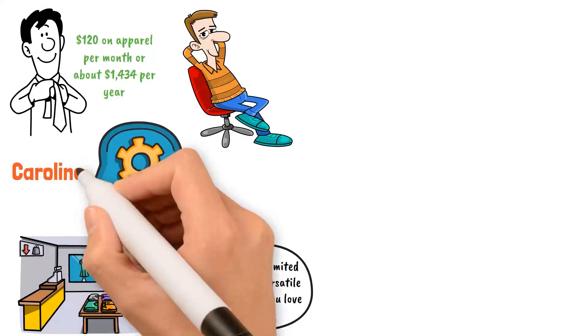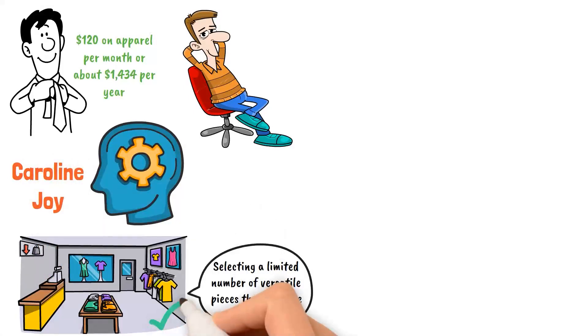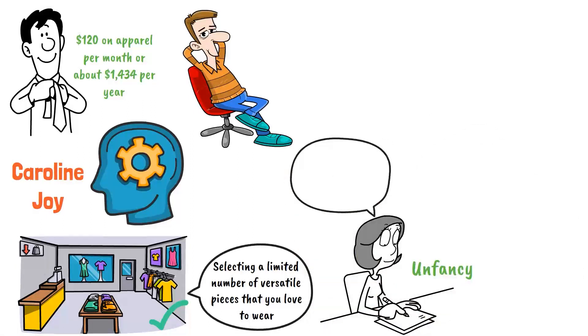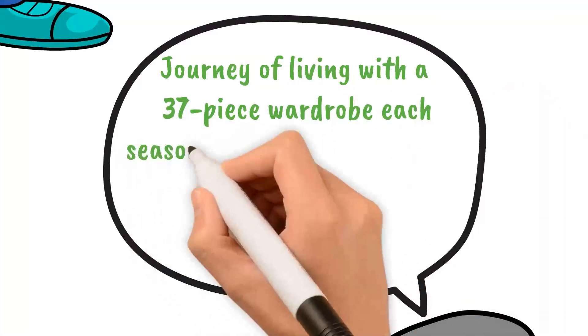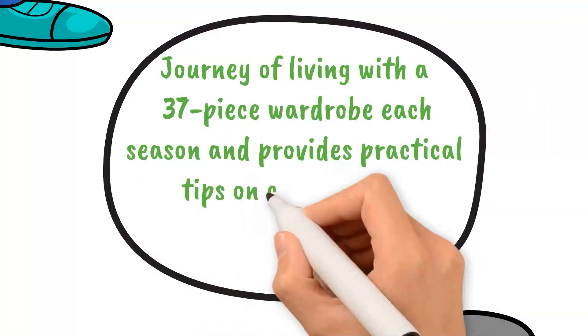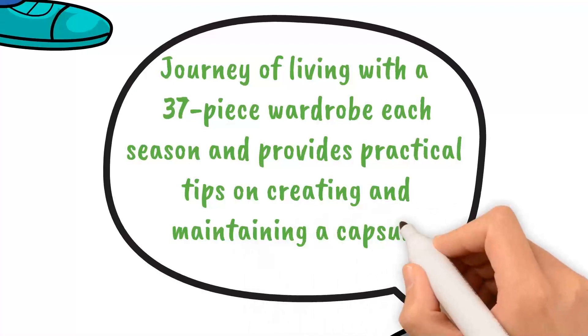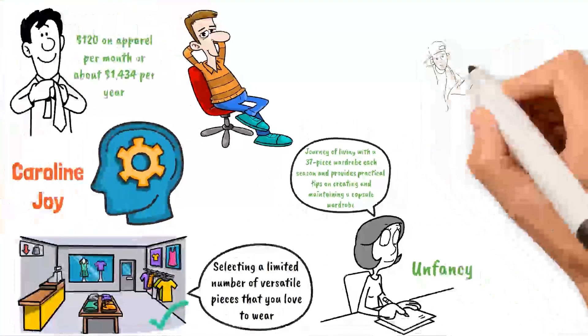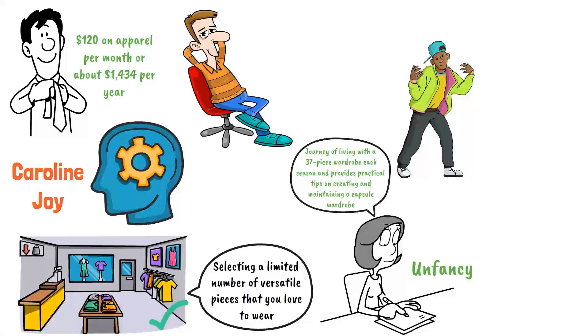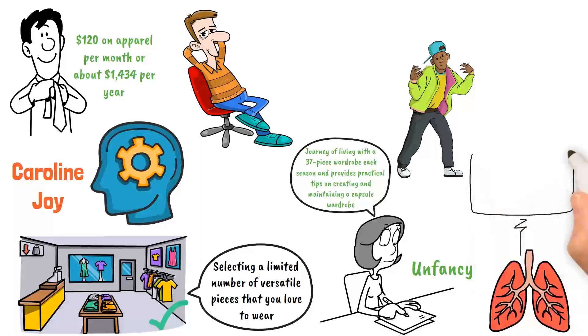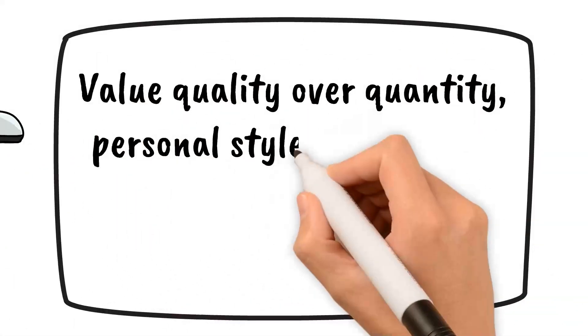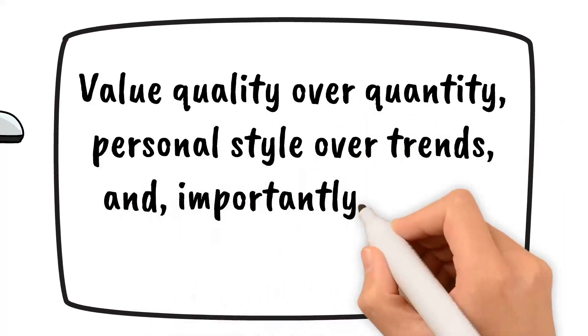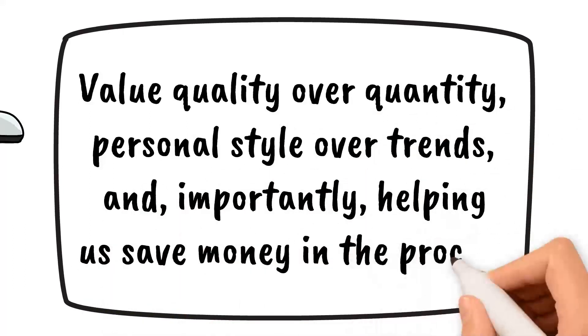Minimalist fashion bloggers like Caroline Joy have popularized the capsule wardrobe concept. Her blog Unfancy chronicles her journey of living with a 37-piece wardrobe each season and provides practical tips on creating and maintaining a capsule wardrobe. In a world where fast fashion dominates, a capsule wardrobe serves as a breath of fresh air, encouraging us to value quality over quantity, personal style over trends, and most importantly, helping us save money in the process.